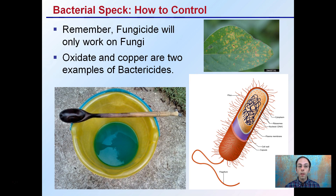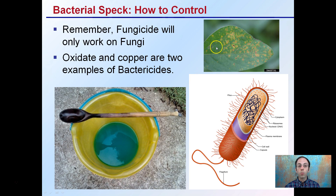How to control it? It's important to remember that fungicides only work on fungi and will not work on bacteria. Oxidate, which is a hydrogen peroxide product, and copper are two examples of bactericides — meaning they actually will control bacteria. They also have some fungicidal properties, but these two in particular also work on bacteria. When you notice these brown specks, don't waste your time with fungicides. Make sure the product you're using is a bactericide to help reduce the spread and control this bacteria from spreading throughout your entire plant.